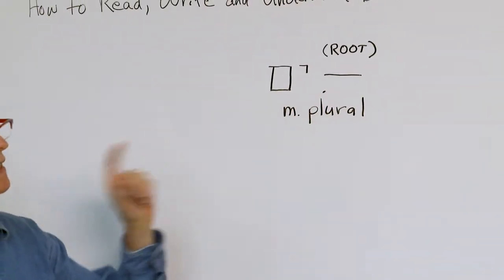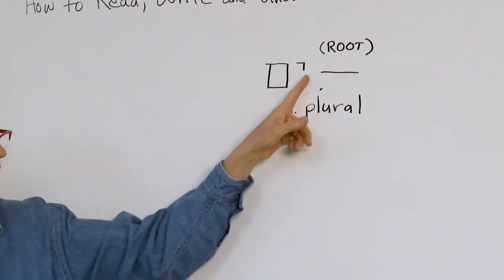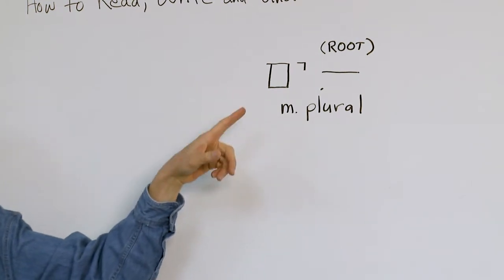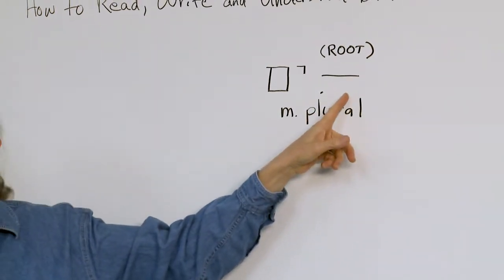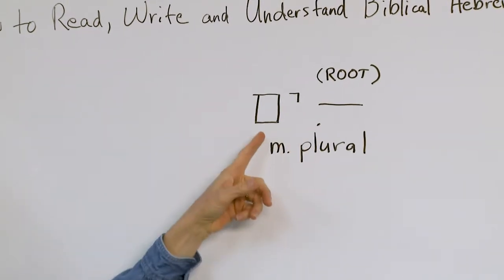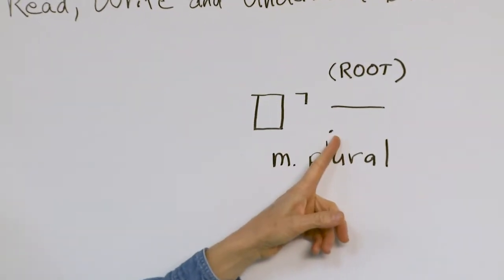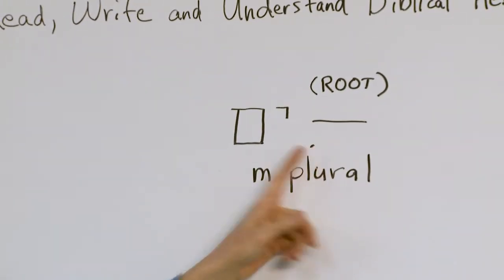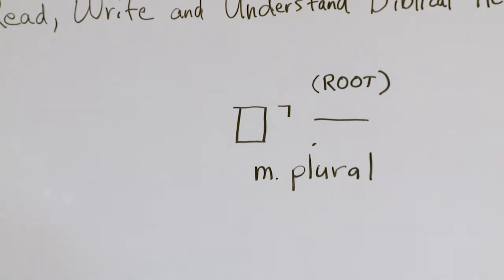Okay, so in this case, it's traditionally, if you see the yud, mem, at the end of a word, and it's a noun, it makes it masculine, plural, and it's traditionally pronounced with the chirek, so pronounced im.